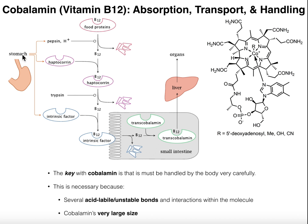The stomach is going to release an enzyme called pepsin, and also there's going to be acid. Now it's very important to protect the B12 from acid. There are several acid-labile bonds in this molecule, meaning they're very susceptible to acid hydrolysis — in particular, this phosphate right here, and there's also an amide bond right here. The cobalt might also inadvertently get released from these nitrogens by the addition of acid. So we have to protect this B12, and the way we do it is the stomach also secretes another protein called haptocorin.